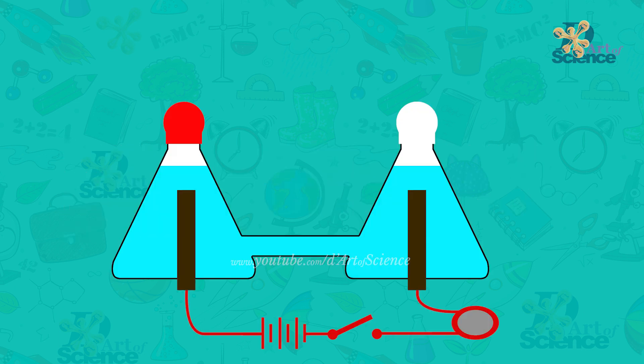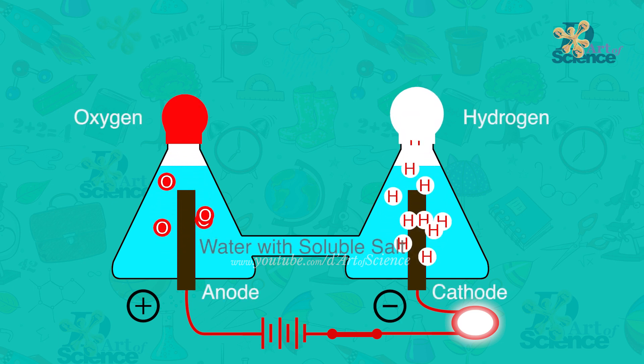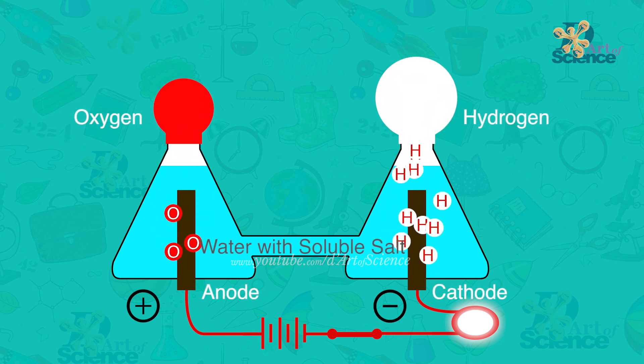Decomposition of compounds. The chemical effects of electric currents can be used to decompose chemical compounds, like water for example, when electricity is passed through it. Water decomposes into oxygen at the anode and hydrogen at the cathode.